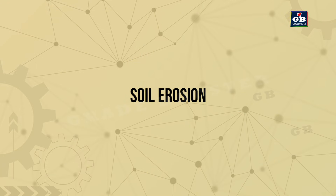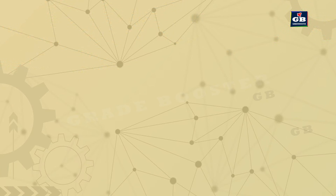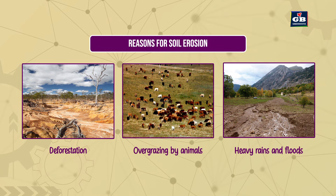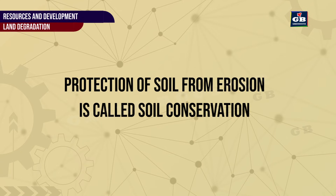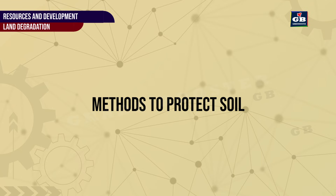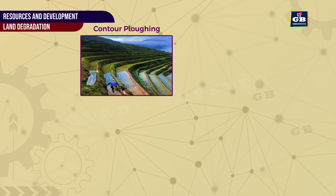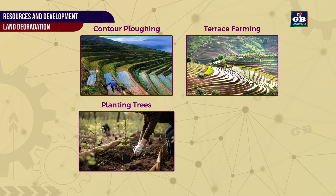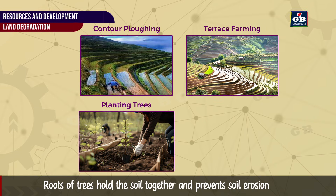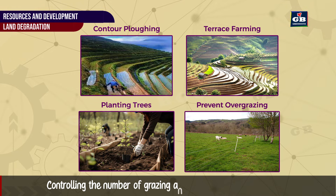Soil Erosion. When the top layer of soil is removed by wind or water, it is called soil erosion. It is caused by deforestation, overgrazing by animals, and heavy rains and floods. Soil Conservation means protecting soil from erosion. Methods include: 1. Contour ploughing — ploughing along natural slopes. 2. Terrace farming — creating steps on hills for farming. 3. Planting trees — roots hold the soil together and prevent erosion. 4. Preventing overgrazing — controlling the number of grazing animals.